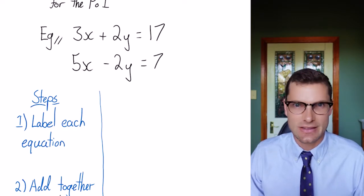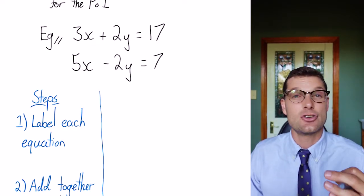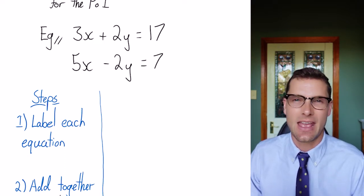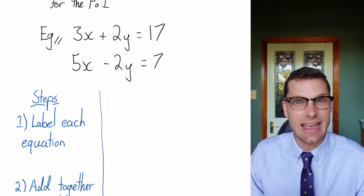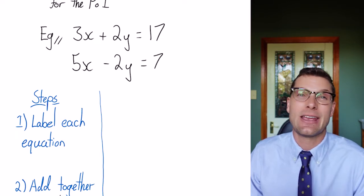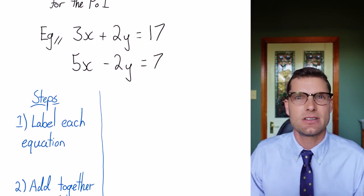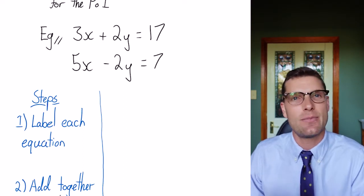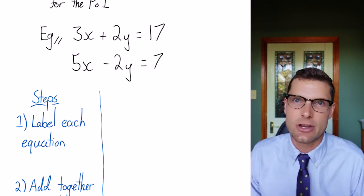So if we have a look at this example here, we can see that the 2y and the minus 2y look pretty similar. And we said we're going to add them together. So we're really looking at eliminating the y terms. So we've just got the x term left, and then we can sub that back into one of our original equations.